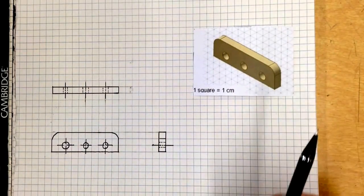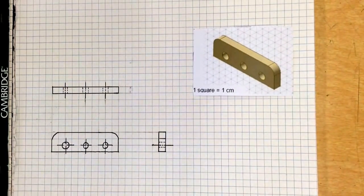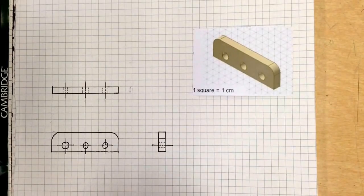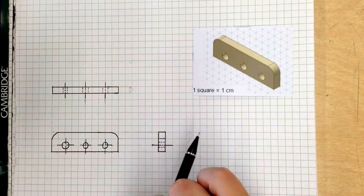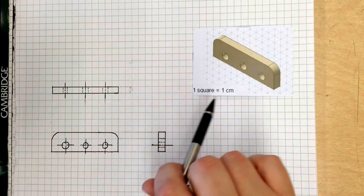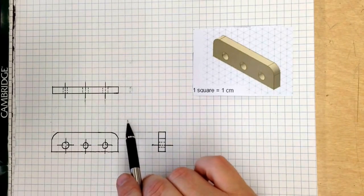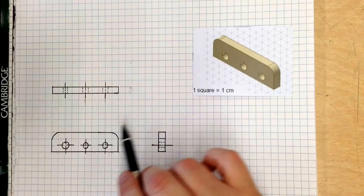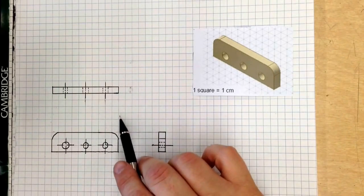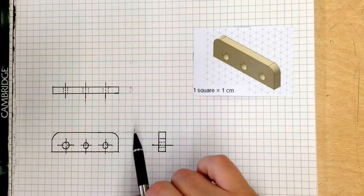We are going to take a few minutes right now and draw a multi-view projection of this object right here. Now you can see that in this one, one square equals one centimeter. This is a scale drawing. Our work right here is a quarter inch, but we're going to do it anyways and just know that these quarter inch would represent one centimeter.